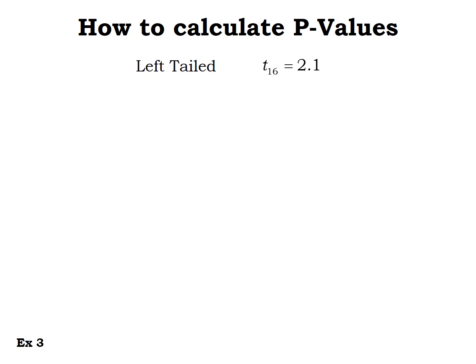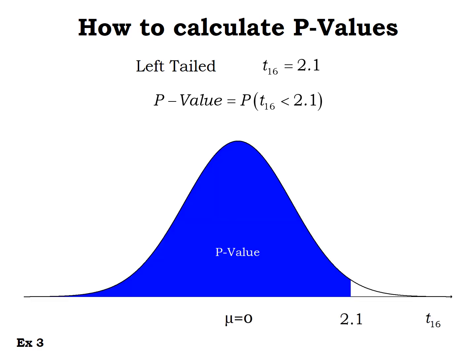Now let's look at a left-tailed test with a t-score. Left-tailed means we want the probability of getting a t-score less than that number — the area to the left of 2.1. Using our t-CDF with 16 degrees of freedom, the p-value would be 0.9740.